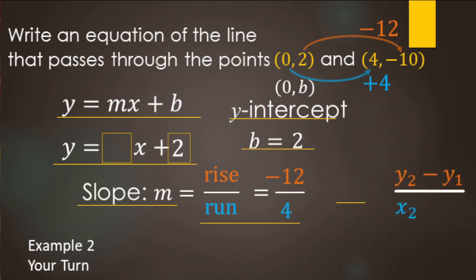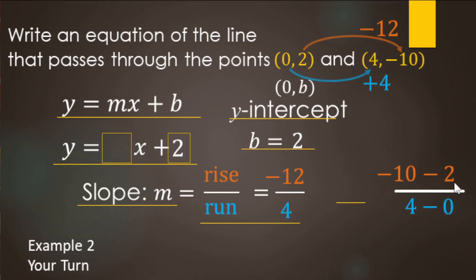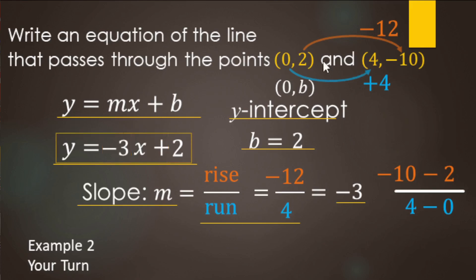Using the slope formula: the y value from the second point is negative ten, the y value from the first point is two, the x value from the second point is four, and the x value from the first point is zero. Negative ten minus two — think of paying ten dollars and then paying another two dollars, for a total of twelve. Then four minus zero makes four. We have a negative divided by a positive, so that's negative. Twelve divided by four makes negative three. So the equation for the line through these two points is y equals negative three x plus two.